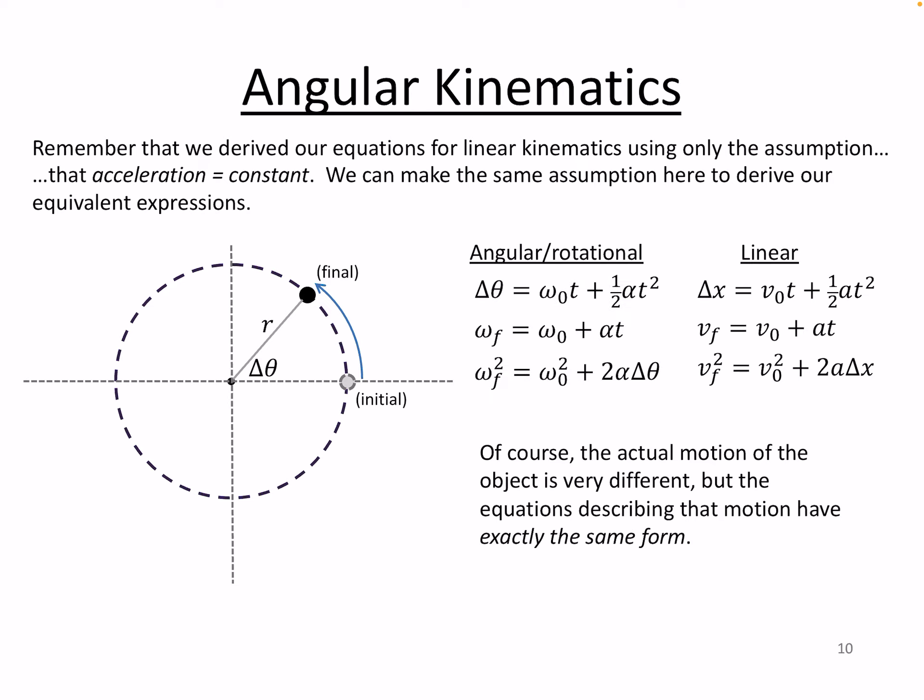So the angular ones look like this. We've got angular displacement there, linear displacement there, an angular velocity there, initial linear velocity there, angular acceleration there, linear acceleration there, etc., etc., and the pattern repeats all the way down.